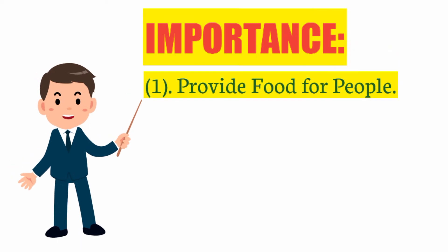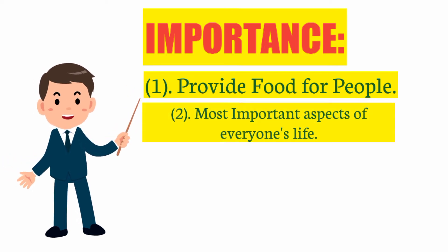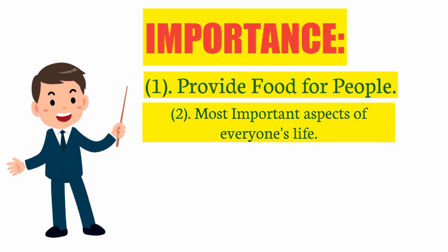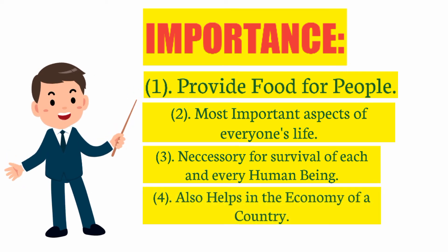Now, the importance of agriculture: the first main aspect is to provide food for people. Agriculture is one of the most important aspects of everyone's life because it provides food and so many other things connected with human life. It is necessary for the survival of every human being, and along with being a necessity, it also helps in the economy of a country.